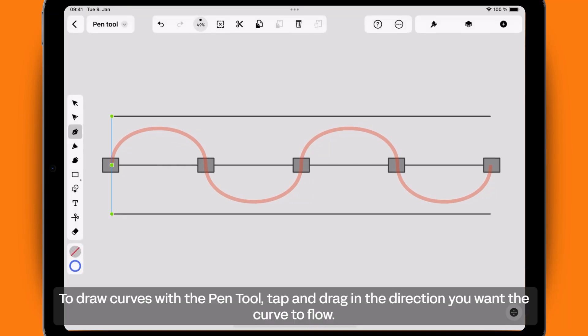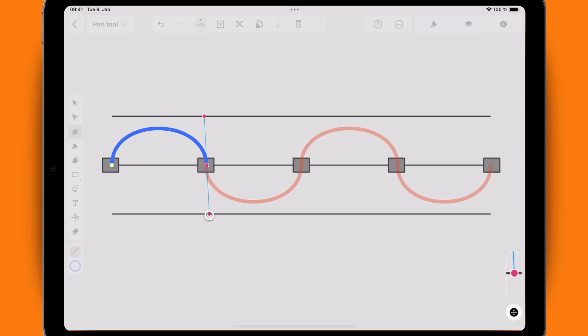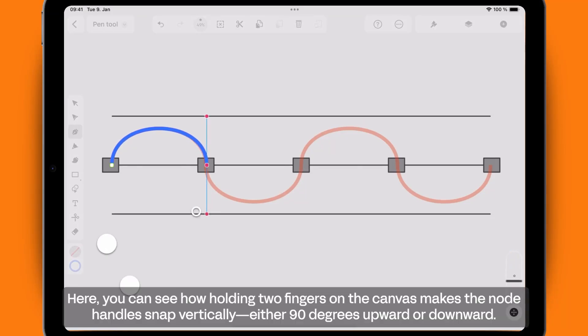To draw curves with the pen tool, tap and drag in the direction you want the curve to flow. Here, you can see how holding two fingers on the canvas makes the node handle snap vertically, either 90 degrees upward or downward.